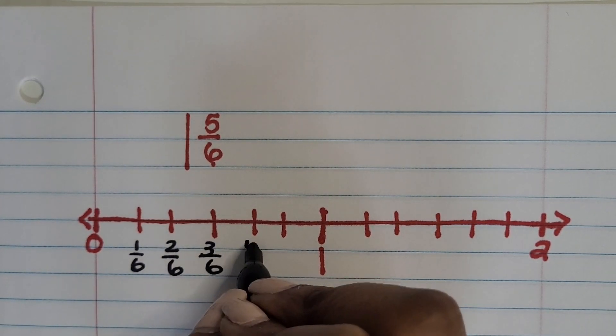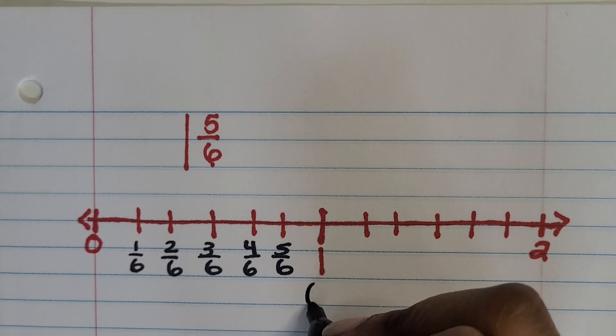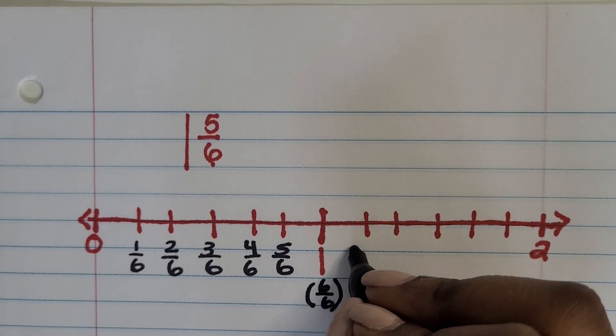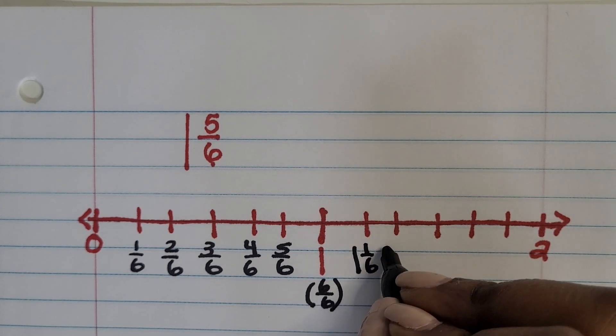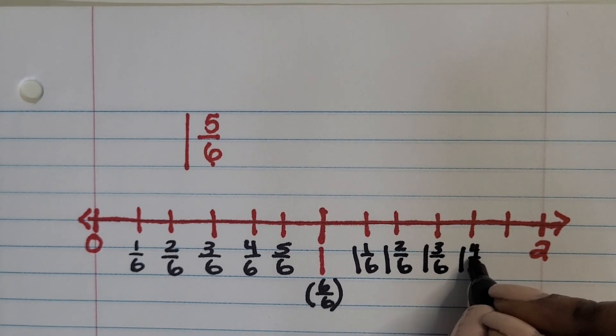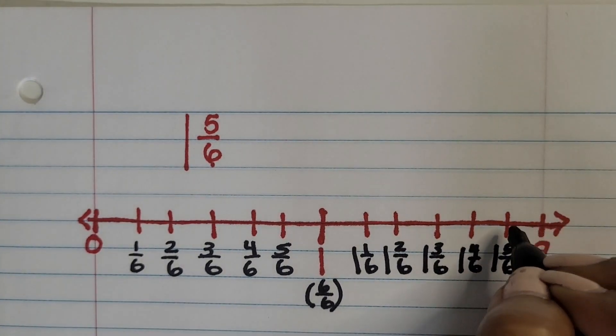So start by labeling the first hole all the way up to 6/6. And then your second hole goes beyond one hole and you're gonna label it using mixed numbers instead of fractions greater than one this time and then count all the way to 1 and 5/6.